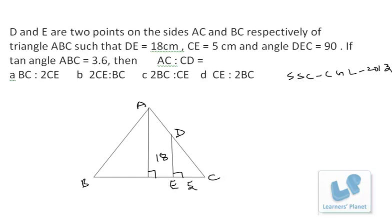Now tan B is given to us as 3.6. Tan C can be calculated as perpendicular by base, that is 18 by 5, which is also 3.6. That means this angle and this angle are the same. That means triangle ABC is an isosceles triangle.